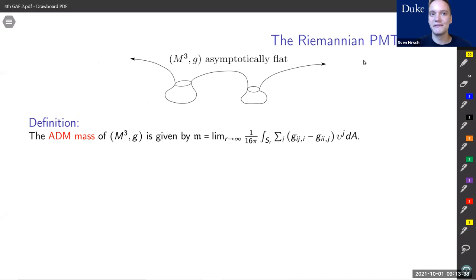To get started, let's first have a look at a couple of definitions. One of the objects we are going to study are so-called asymptotically flat manifolds. These are non-compact manifolds where the metric is approaching the Euclidean metric at infinity at a certain rate. Physically, these asymptotically flat manifolds model isolated gravitational systems such as stars, black holes, or even entire galaxies.